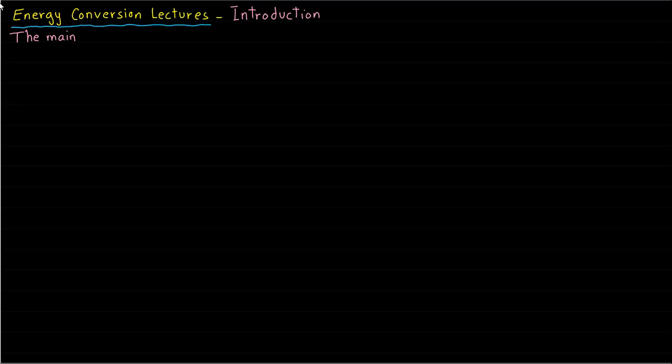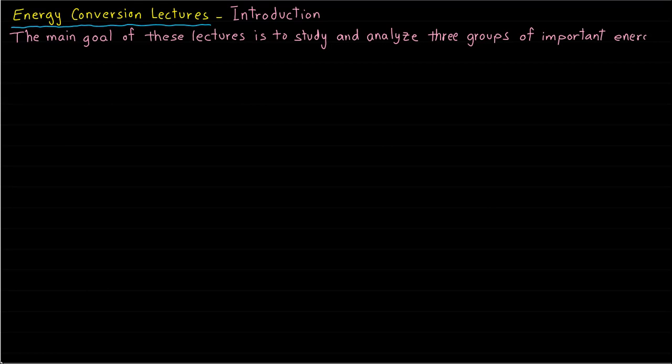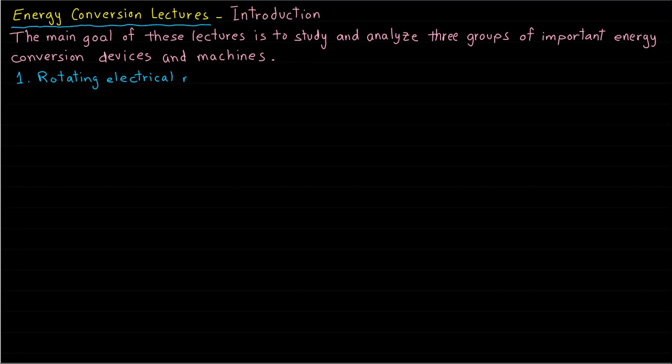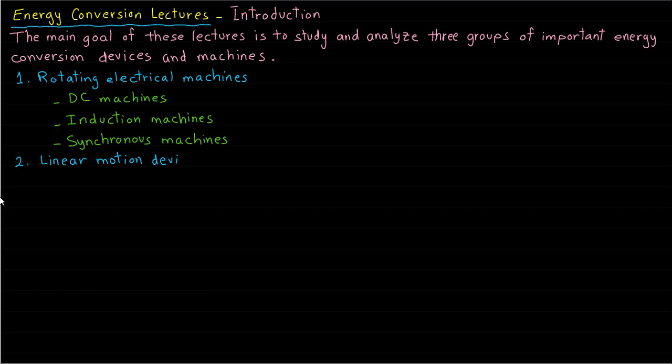The main goal of these lectures is to study and analyze three groups of important energy conversion devices and machines. The first group is rotating electrical machines, including DC machines, induction machines, and synchronous machines. The second group is linear motion devices such as relays and solenoids. And the third group is the transformers.